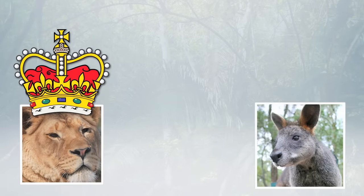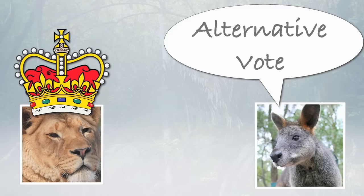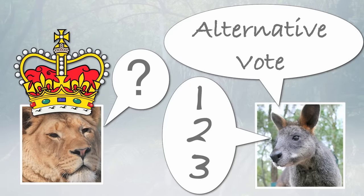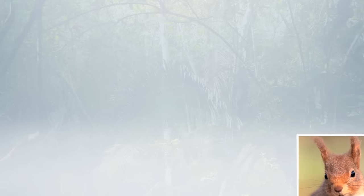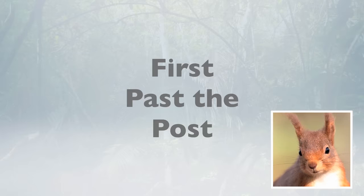However, one of Queen Lion's subjects from a distant land, Wallaby, has a solution: the alternative vote. To find out the difference, let's follow one voter on election day, Red Squirrel, under both systems.